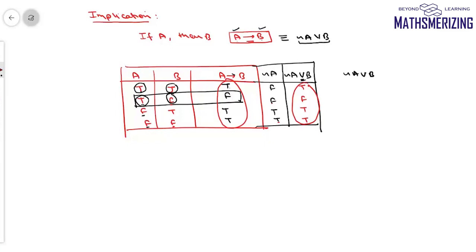This A→B is also called a conditional statement — that is, 'if A then B,' meaning if A is true then B must be true.